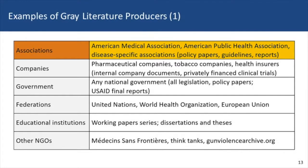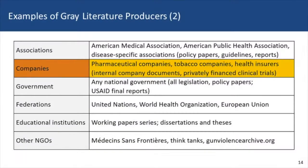Let's look at some examples of producers of gray literature. Those producers include associations — in the medical area, the American Medical Association would be an example. They have policy papers, guidelines, and reports that you won't necessarily find in journals. On the public health side, the American Public Health Association has similar materials. For-profit companies are also producers: if you have a research question about the impact of a particular drug and a pharmaceutical company has done the trials, they're the ones that have the reports of the results — that's a form of gray literature.